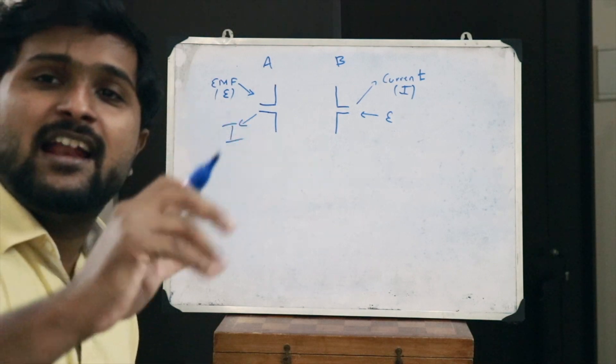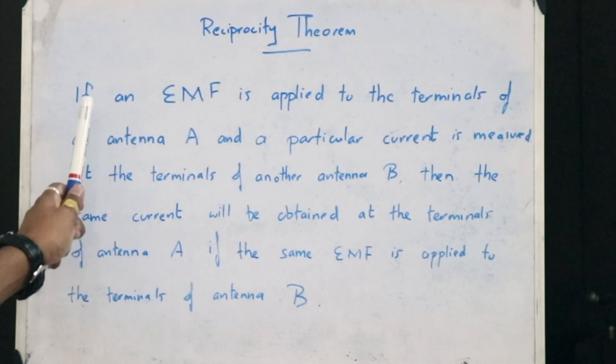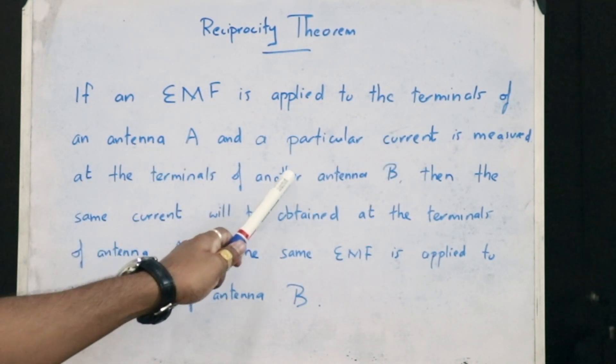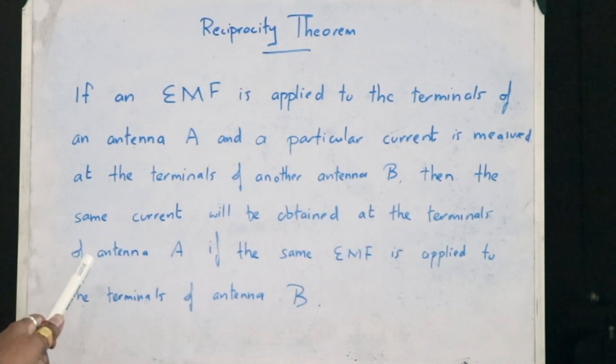In other words, when a particular EMF is applied to the terminals of antenna A and a particular current is obtained at the terminals of antenna B, then if the same EMF is applied to the terminals of antenna B, the same value of current will be obtained at the terminals of antenna A.